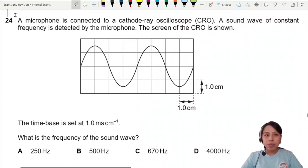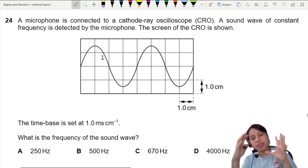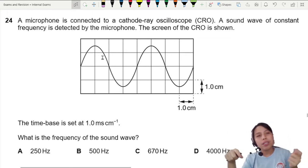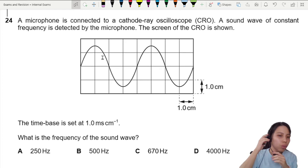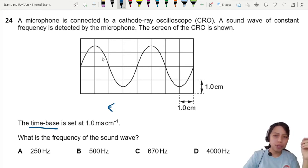Here we have a CRO and it's detecting this wave. It's a machine. You can see on the screen this pattern will form from your microphone that you send to this. So time-base is a setting that we use in CRO to zoom in or zoom out horizontally.